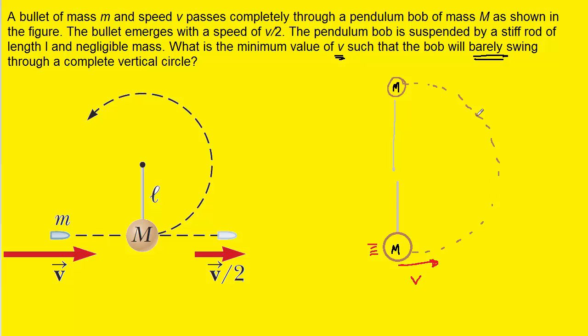Now, if this object is going to barely make it through a vertical circle, that means that right at the top of its motion, its final velocity is going to be zero. So we can mark that Vf would equal zero up here.